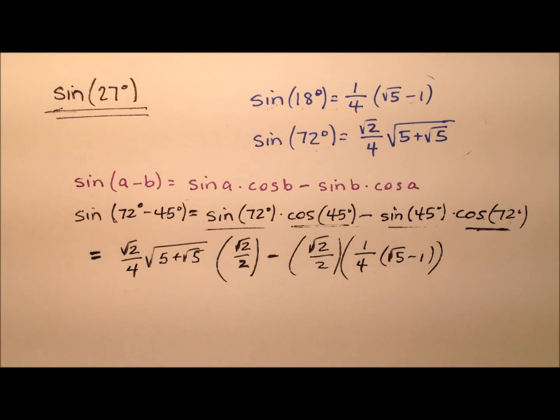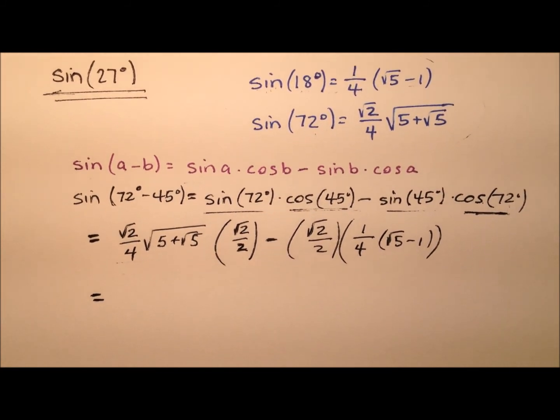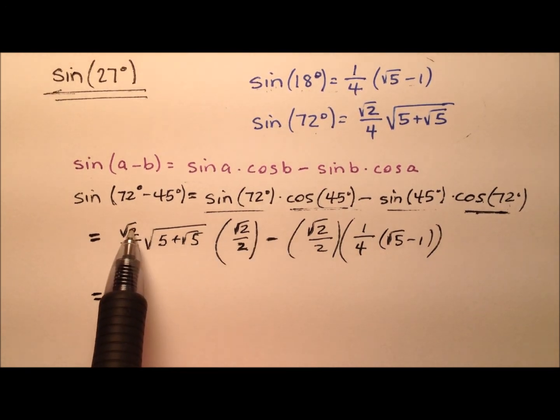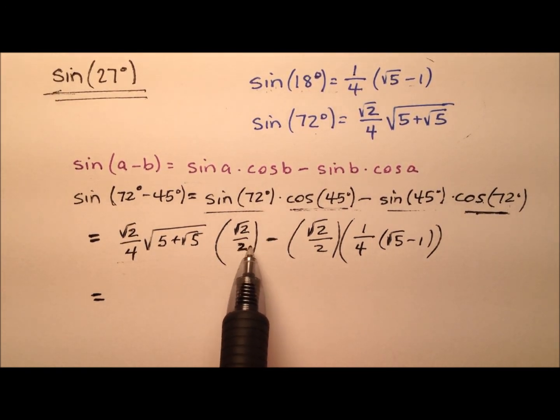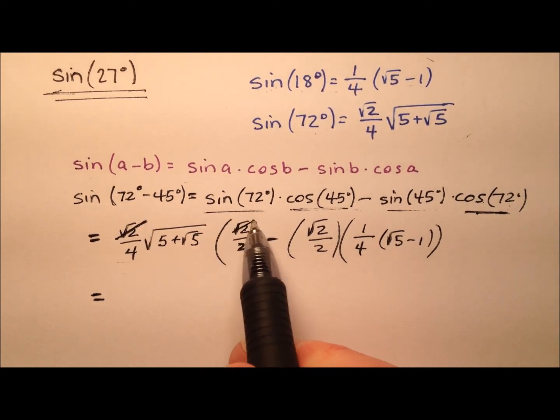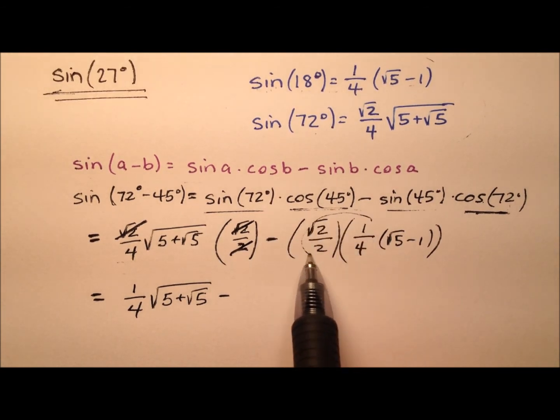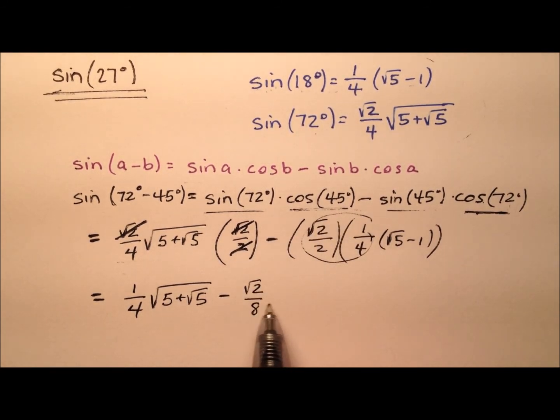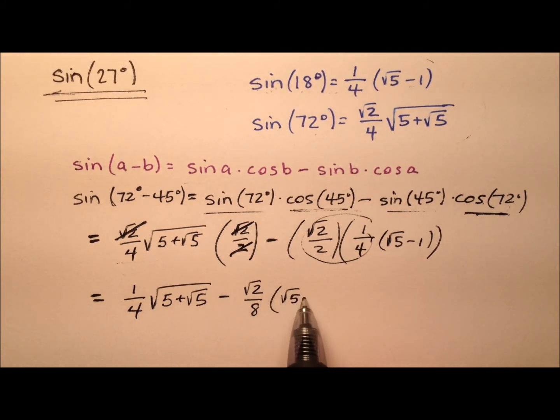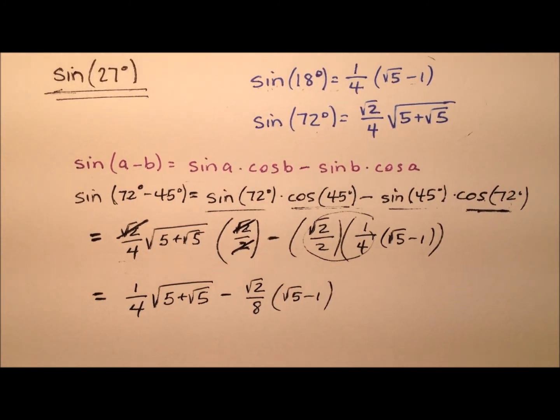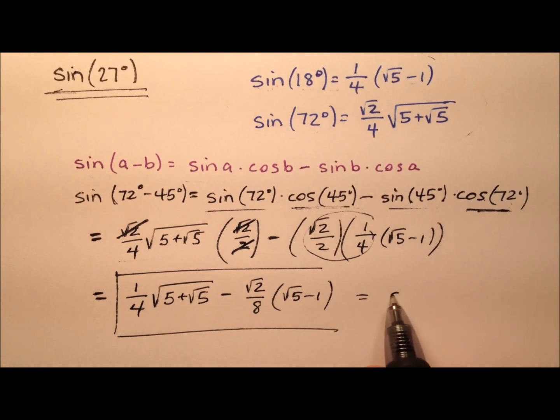So the best we can do is clean this expression up a little bit. We have the square root of 2 times the square root of 2, which makes 2, which cancels with this 2. So it looks like we have 1 fourth times that square root expression minus the square root of 2 over 8 times the square root of 5 minus 1. So this isn't too bad.